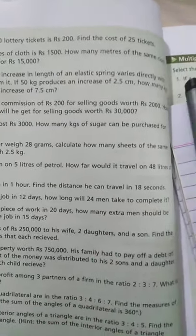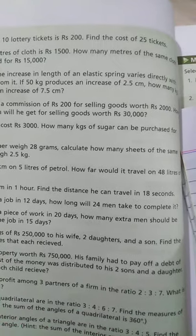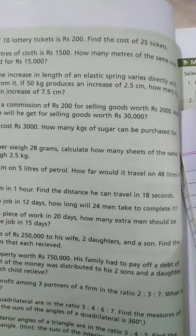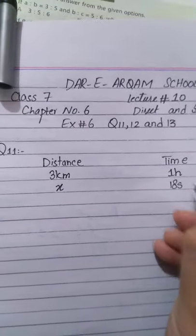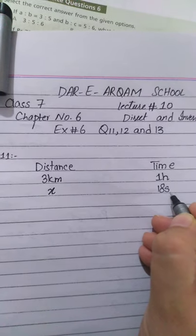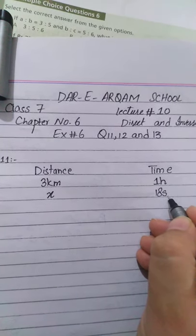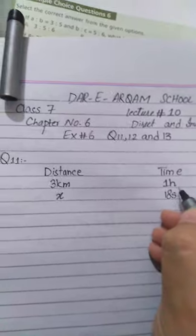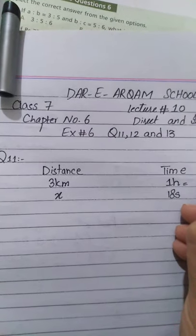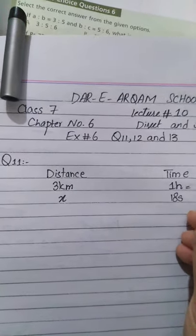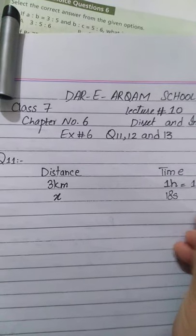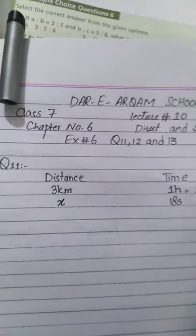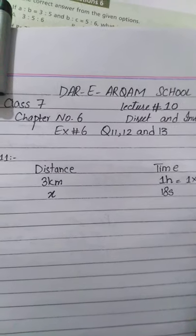In the second statement, they say: find the distance he can travel in 18 seconds. The distance is not given, so I am putting X here. The time is given in seconds, but the unit of time is not the same. First, you have to make the units of time the same — convert one hour into seconds. In one hour there are 60 minutes and 60 seconds, so multiplying 60 by 60 gives 3600 seconds.